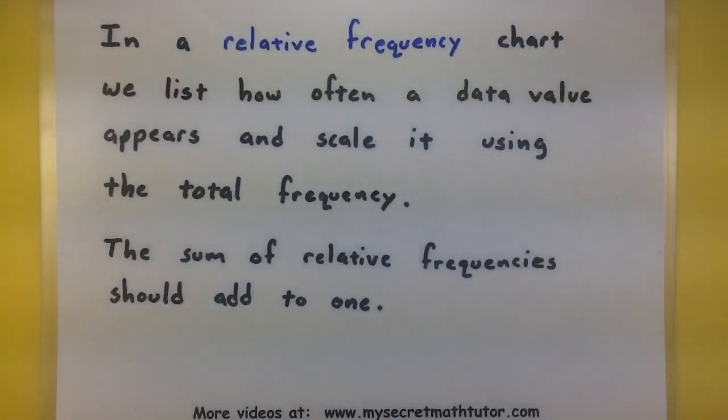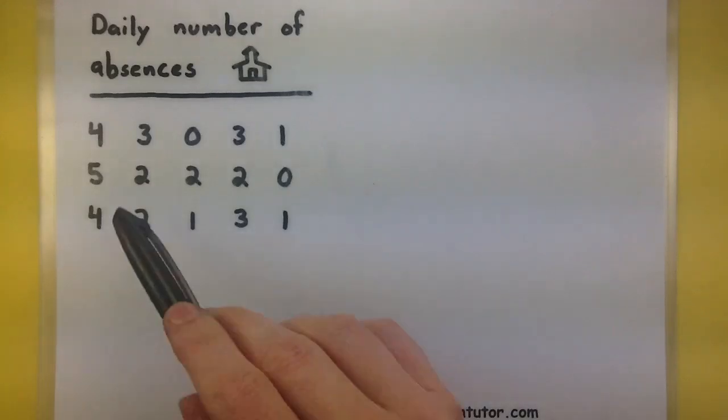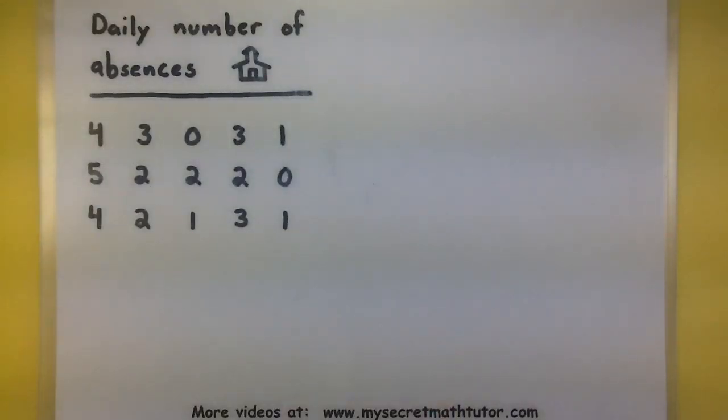Let's get some data and see what this looks like in practice. Okay, so in my data, I have the daily number of absences at some given school. We can see that on day 1, there were 4 absences. Day 2 had 3 absences, day 3 had 0 absences, so on and so forth. So give me any day and I'll tell you how many students missed on that day.